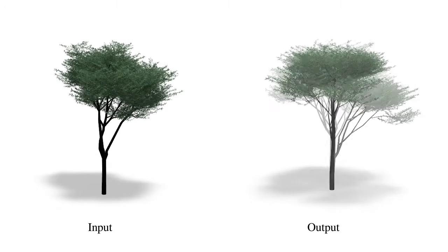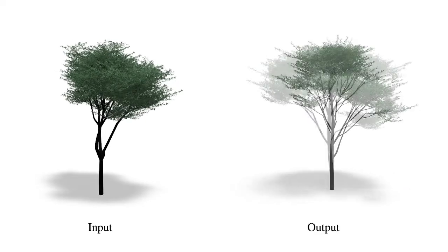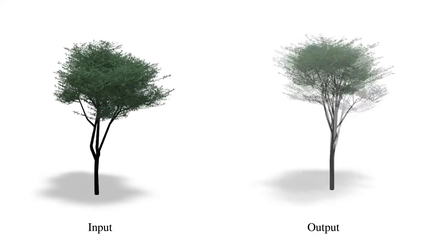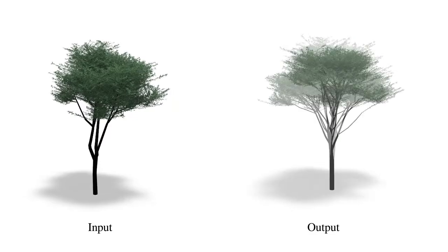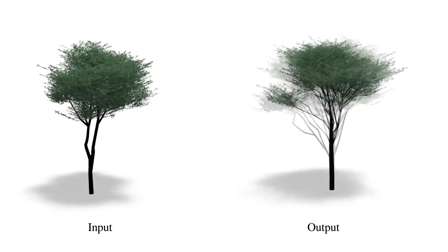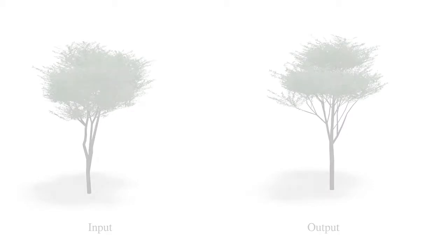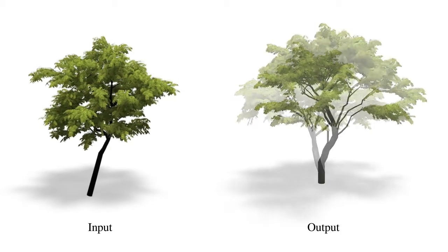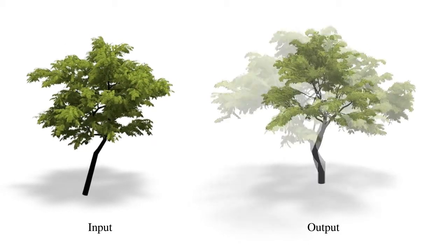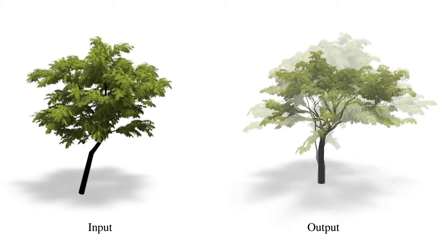We present a fully automatic method for stochastic inverse procedural modelling of tree models — that is, finding the generation parameters for a given geometry. In general this is a complex problem, however by restricting ourselves to branching structures we have found an efficient approximate mechanism.